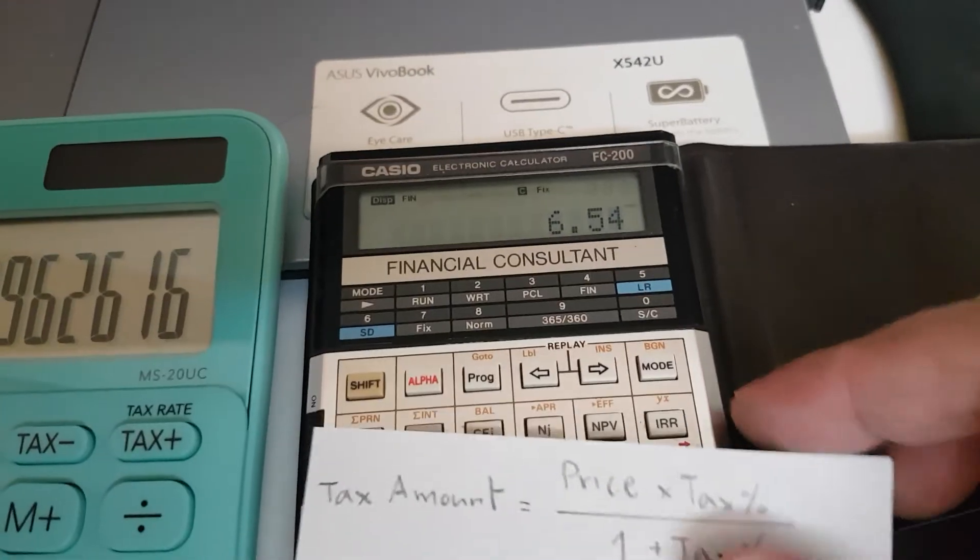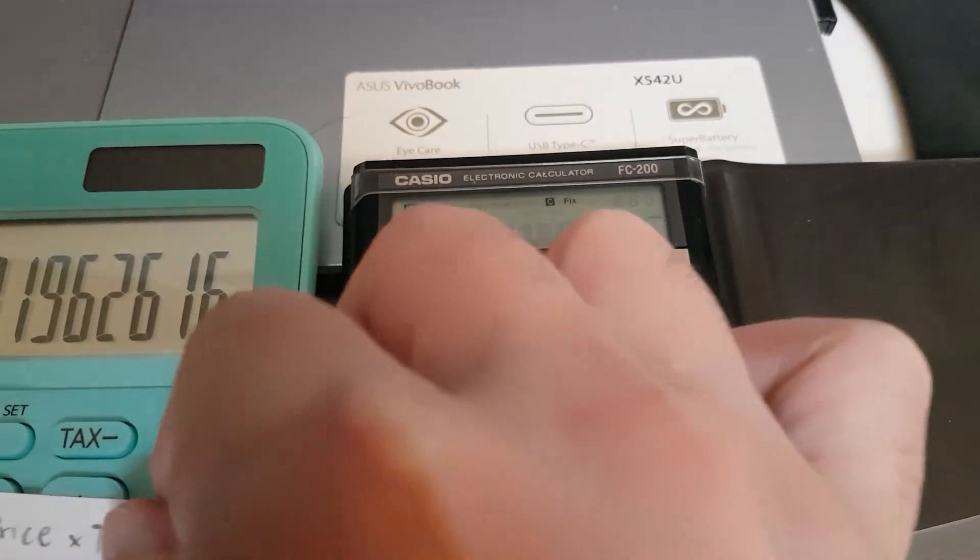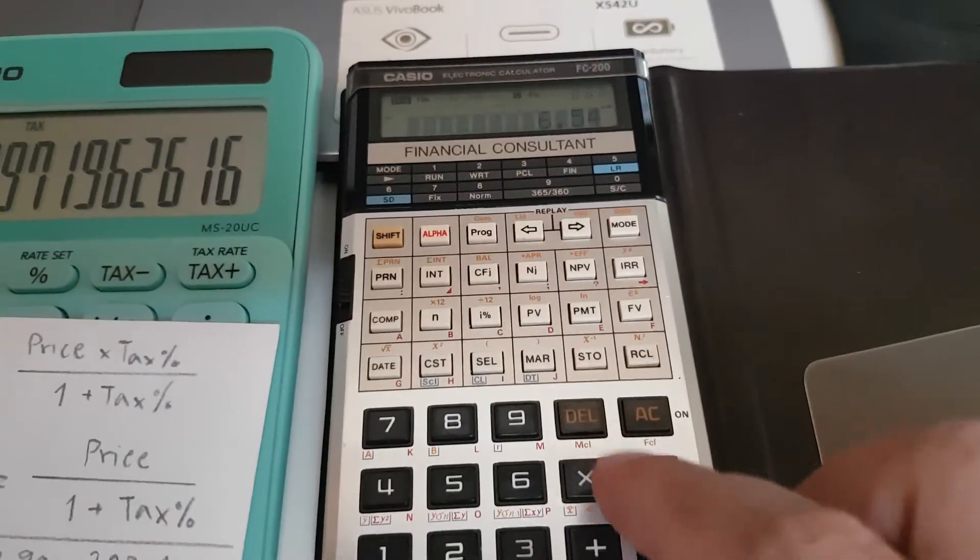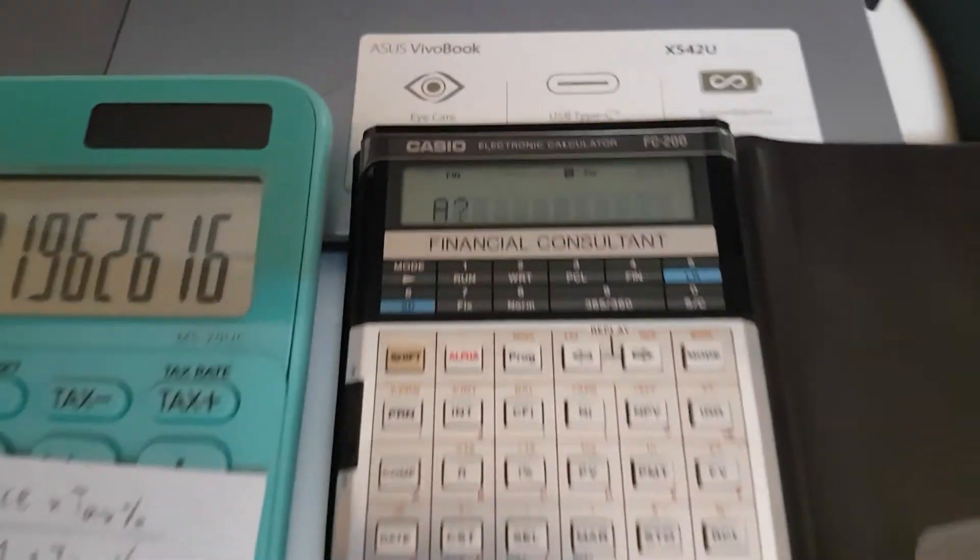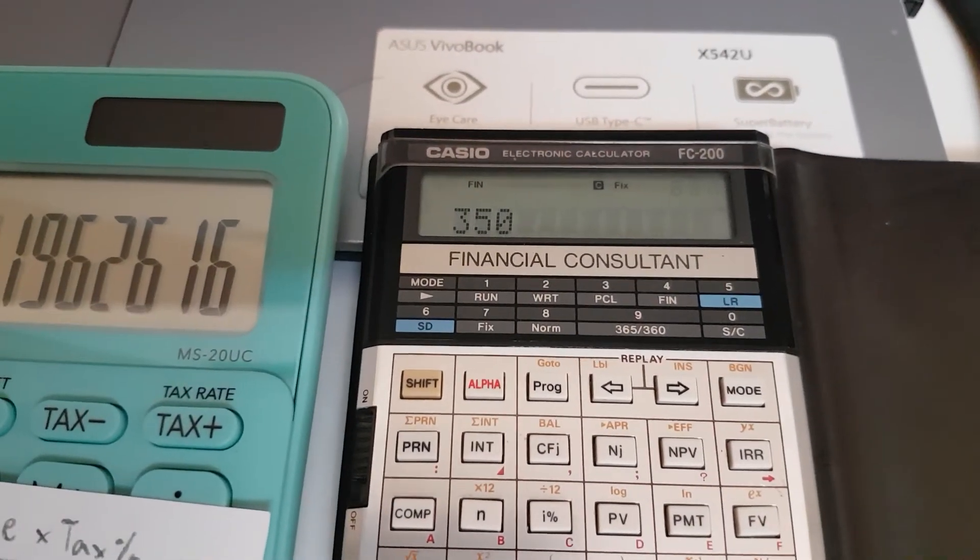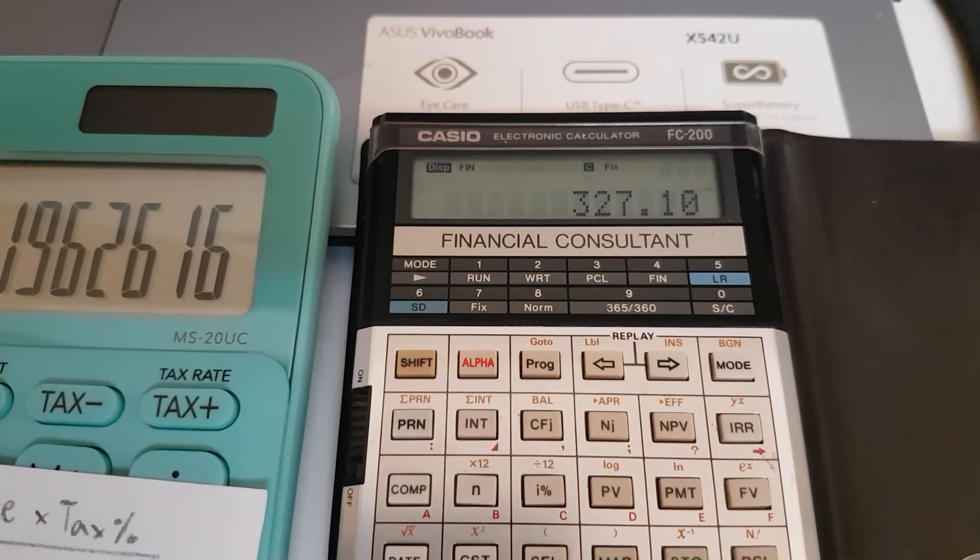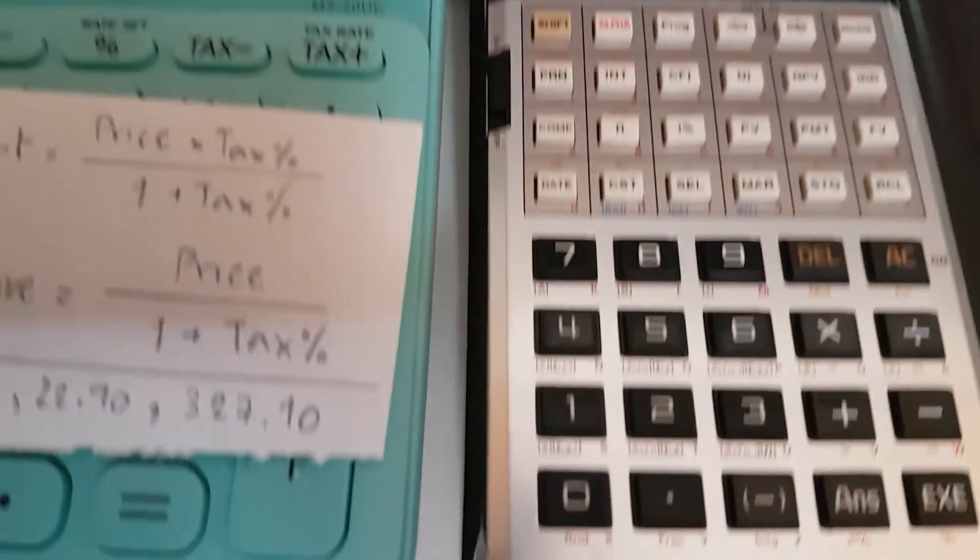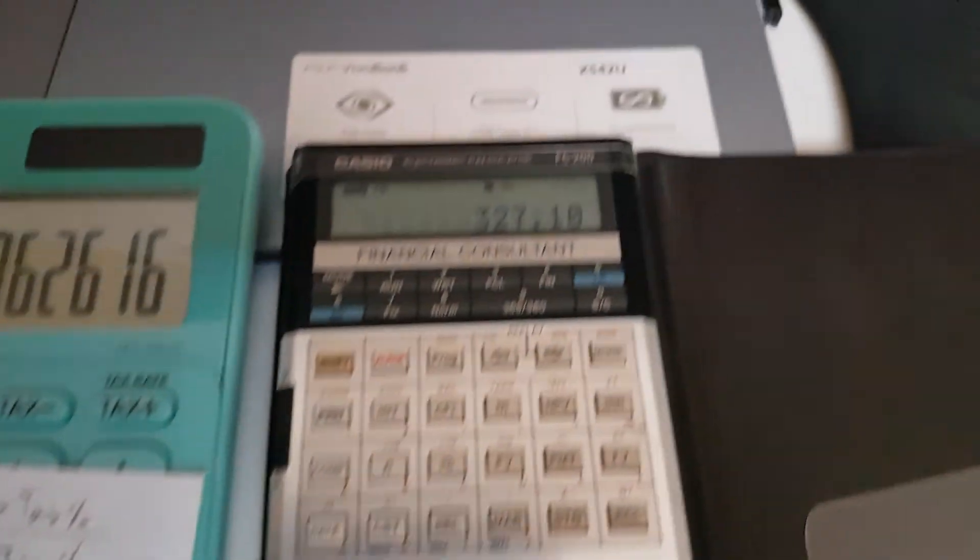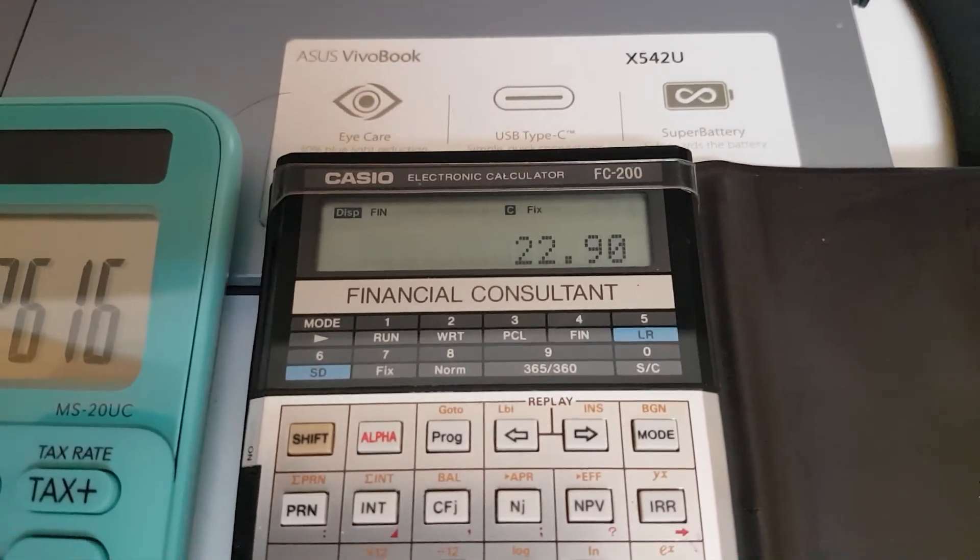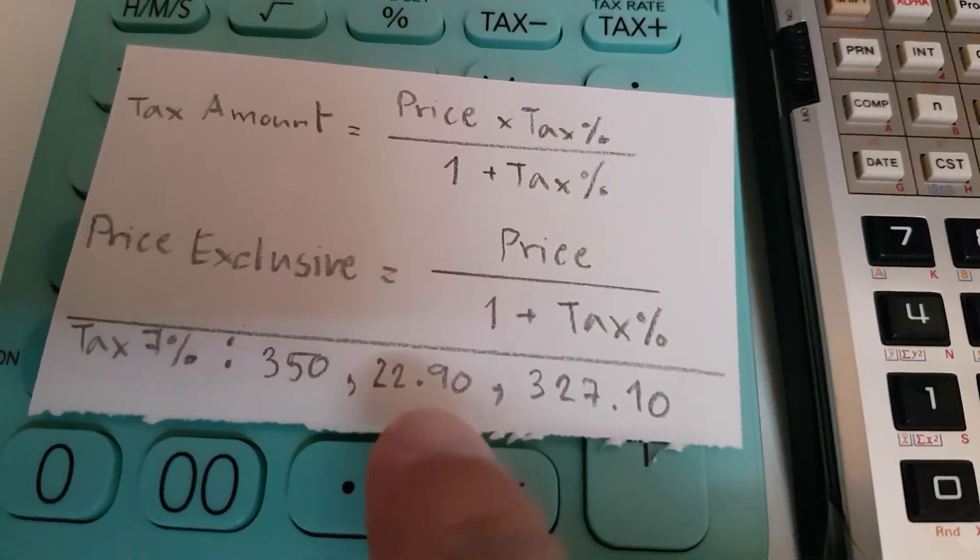And to check my own program if my program is done right, 350 gives 327 and 10. The tax amount is 22 and 90. 22 and 90.